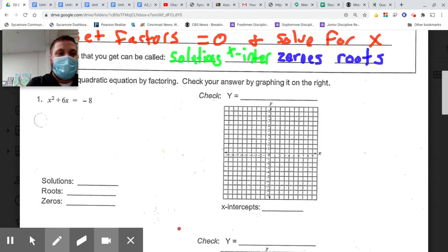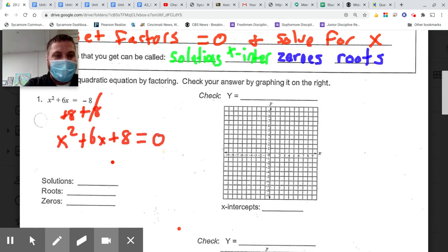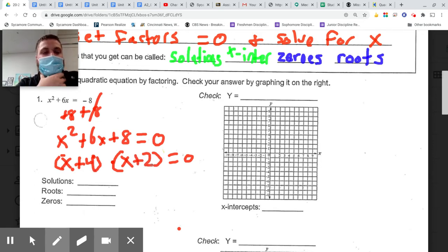All right, so let's go back here. First thing I want to do is make this thing say equals zero. So the very first thing I'm going to do is add eight to the other side, and I've got x squared plus 6x plus 8 equals zero. Now I'm going to solve this by factoring. It's just a simple trinomial with no a values, so I just need to open up my parentheses, put my x's in front. I'm looking for two numbers that multiply to be eight and add to be six. Those two numbers would be positive four and positive two.